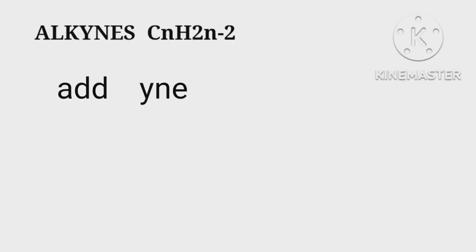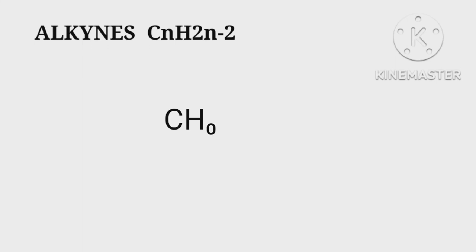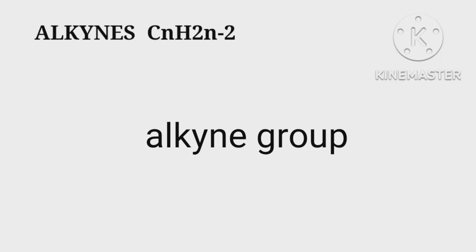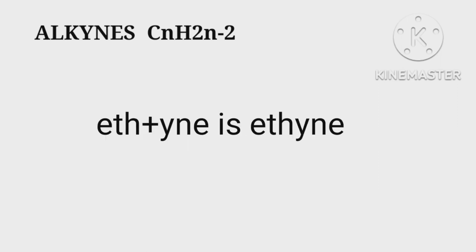In alkynes, we add '-yne' to the root name. CH2 is not possible because the valency is not satisfied. C2H2 means 'eth'; H2 means two less than two times the number of carbon atoms — that is, 2×2−2 = 2. Hence it belongs to the alkyne group. The name is eth + yne = ethyne.